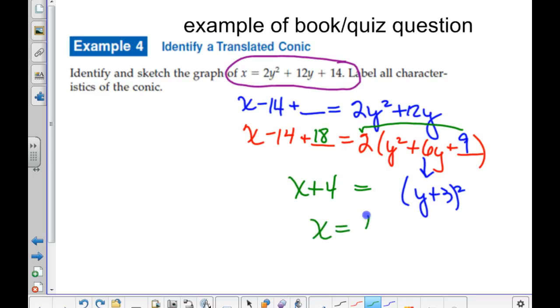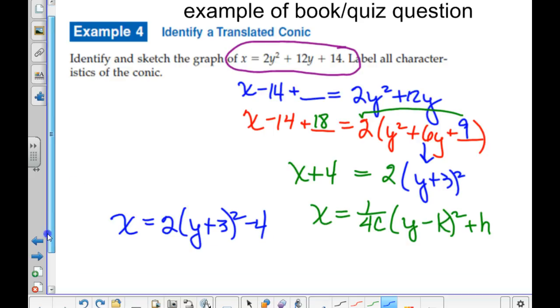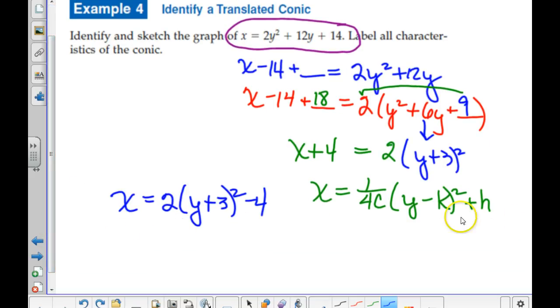So this will be Y plus 3 squared is a 9. So what do we actually have to add to the other side? So that's an X plus 4. So the vertex of this parabola is at negative 4, negative 3. That is bad. I don't like it. Negative 4, negative 3. Somewhere over here?